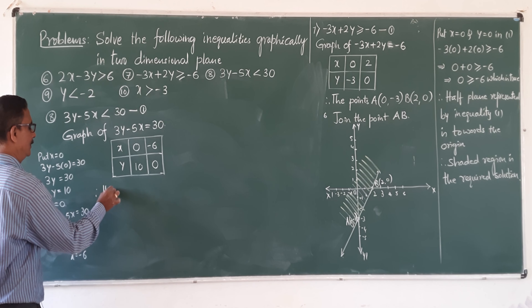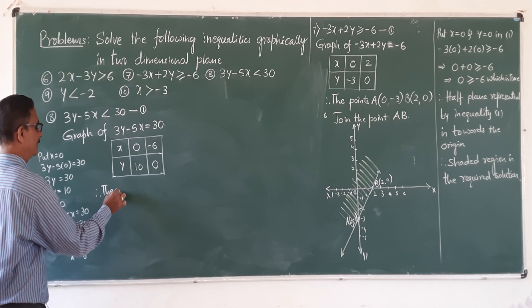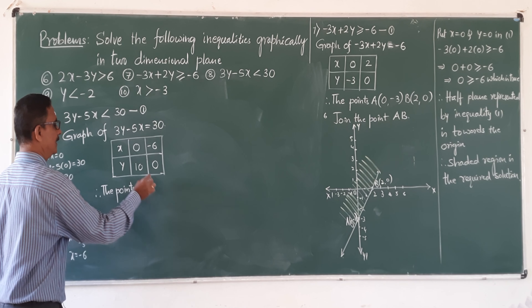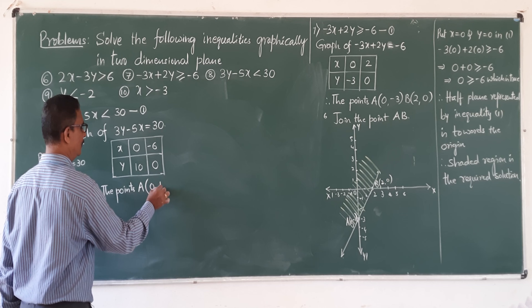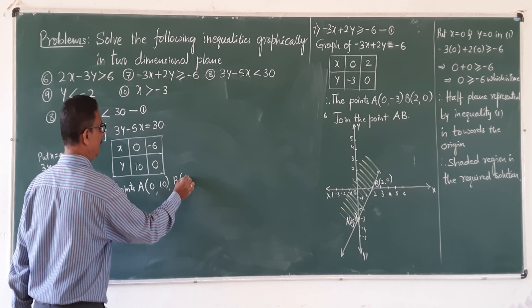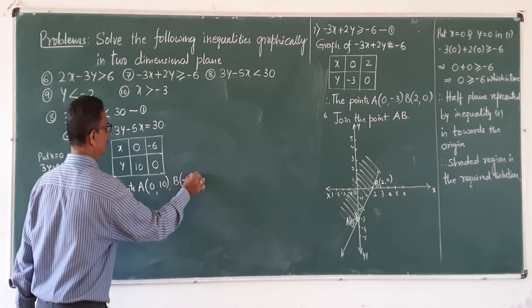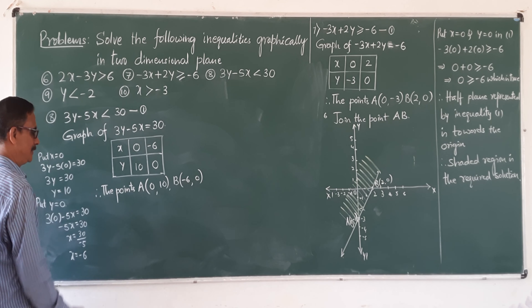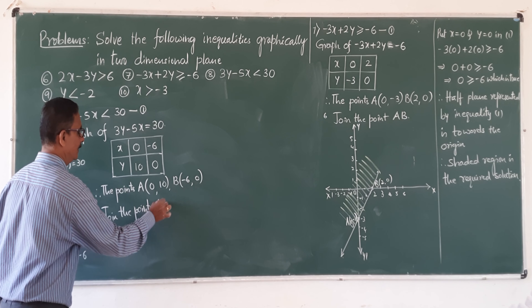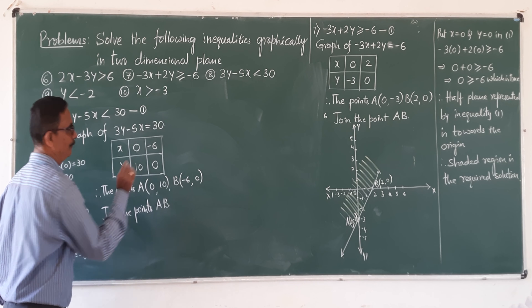Therefore, point A is (0, 10) and point B is (minus 6, 0). Join the points A and B.